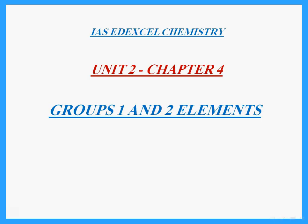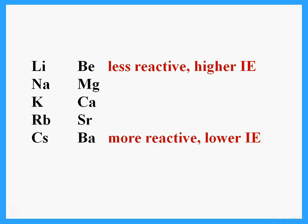Hello, this is Dr. Hannah Asil, and today we're talking about Unit 2, Chapter 4 in IAS A-Level Excel Chemistry. This is talking about Groups 1 and 2 elements, their reactions, and other characteristics.